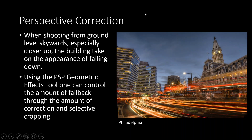Perspective correction — a lot of times it's hard to shoot at ground level and avoid buildings leaning over, especially with a wide angle. In PaintShop Pro, they have the Geometric Effects tool for vertical correction. That helps a great deal with the amount of fallback, and I'll walk through some images as I edit them.